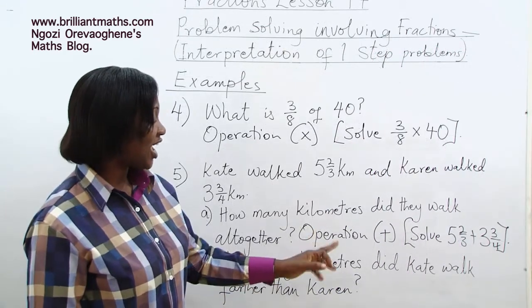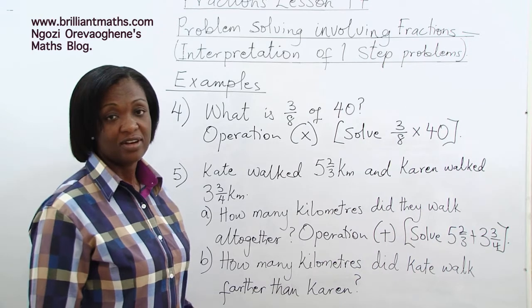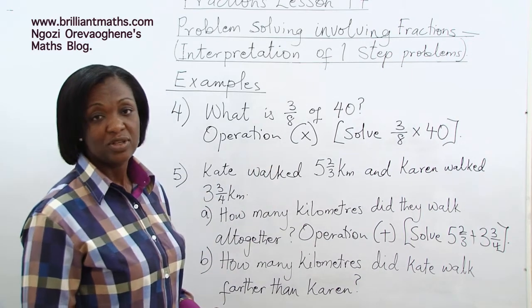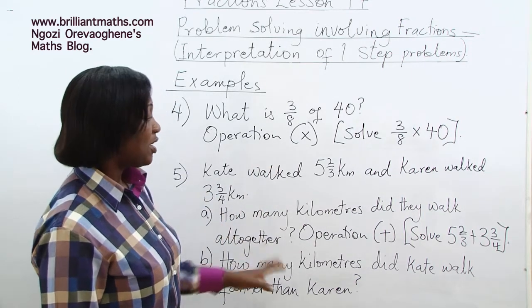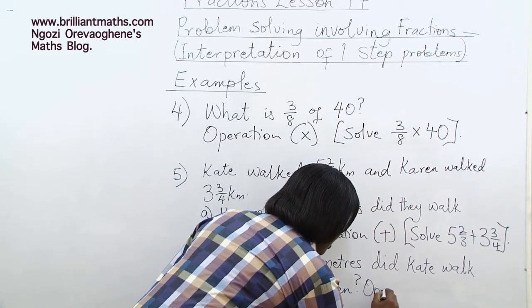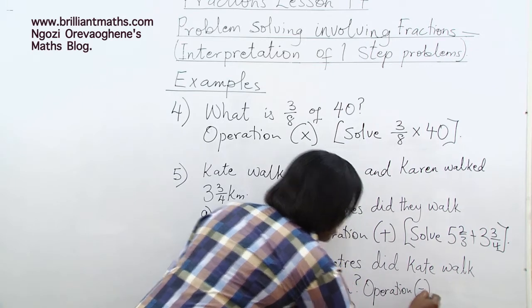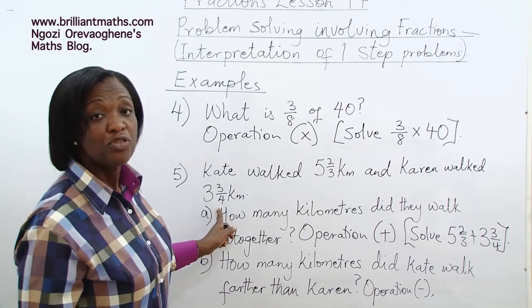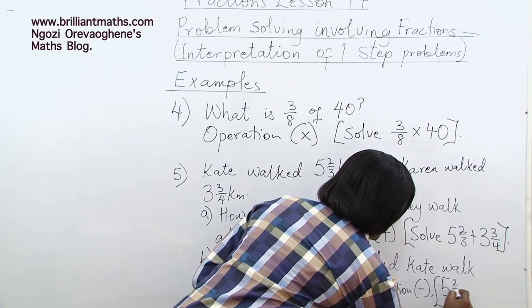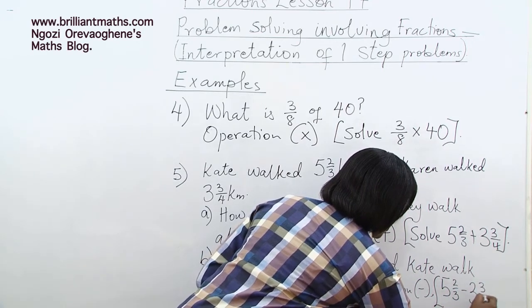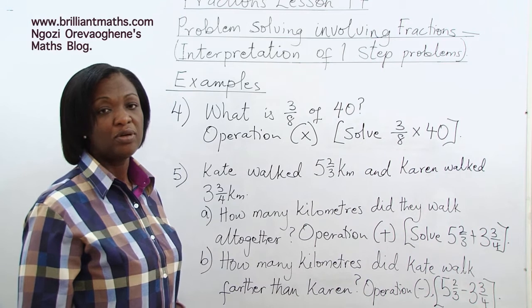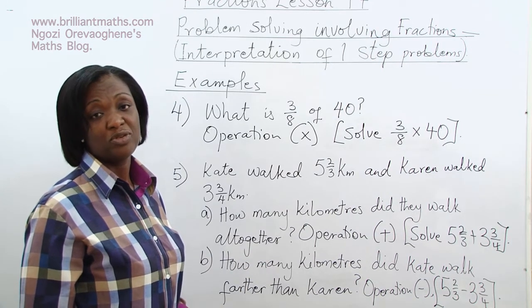Part B: How many kilometers did Kate walk further than Karen? Kate walked five and two-thirds kilometers and Karen walked three and three-quarter kilometers. We want to find the difference between the two distances, so the operation is subtraction — five two-thirds minus three three-quarters. Pause the video, work it out, and I'm very sure you'll get it correct.